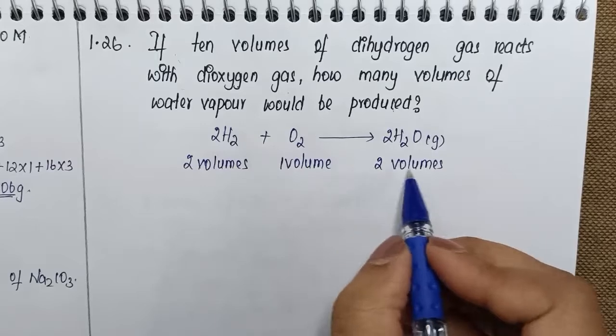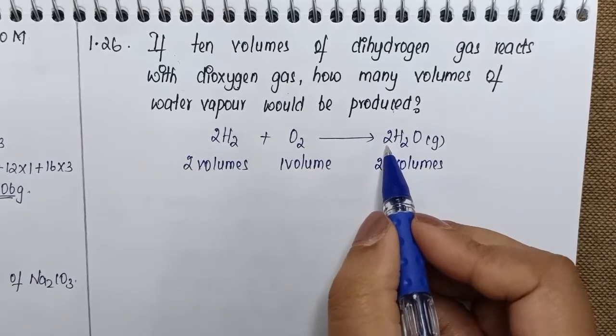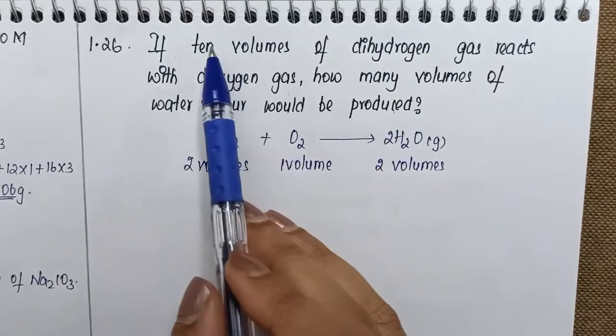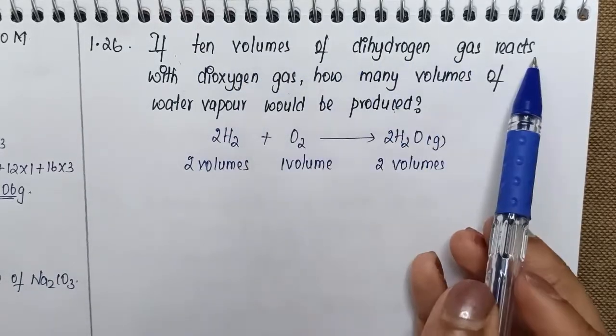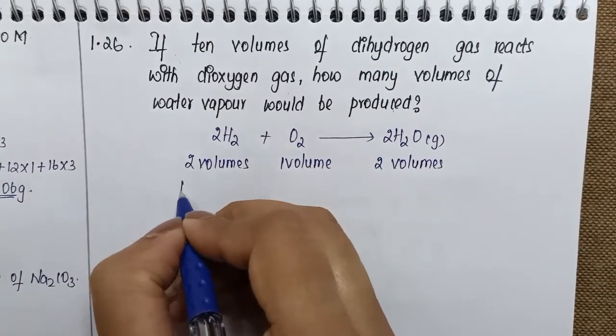Now as per the question given to us, 10 volumes of dihydrogen is reacting. So here if I'm taking 10 volumes...